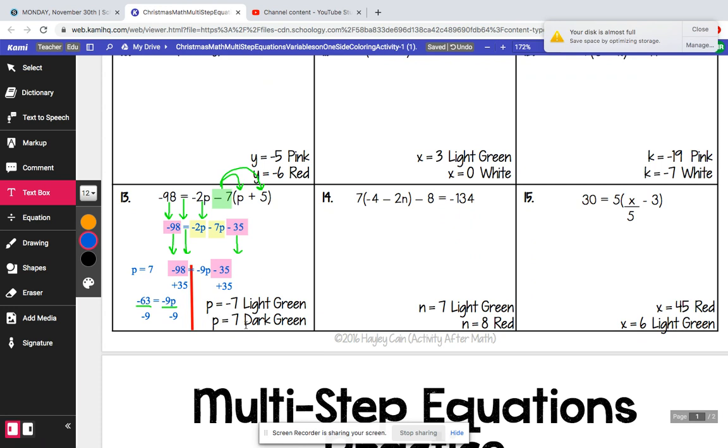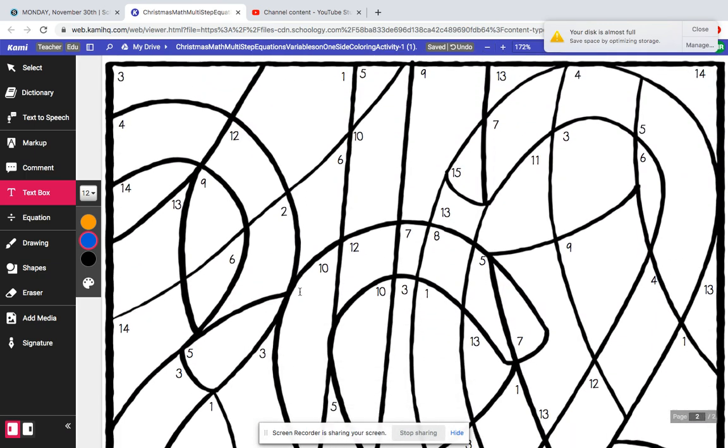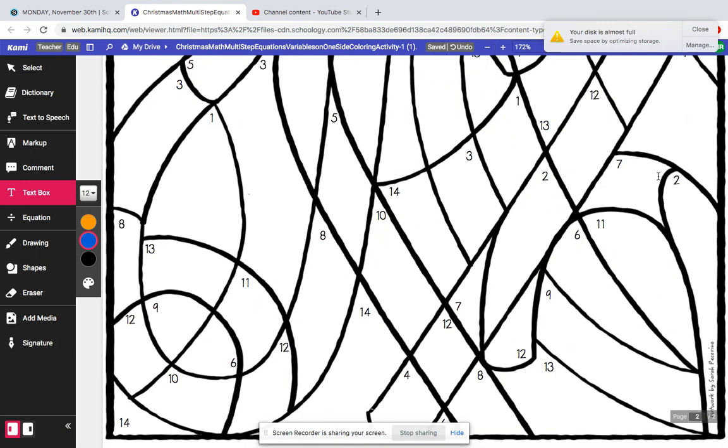So p equals 7. So we're going to color all 13s because that's the problem we're in, positive 7. So 7 will be dark green. This will be dark green. This will be dark green.